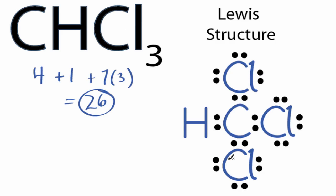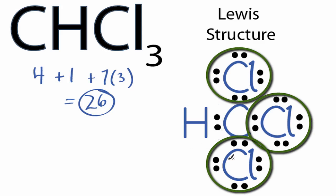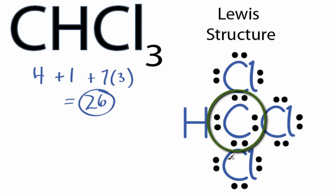So we've used all 26 valence electrons in the Lewis structure for CHCl3, and each of the atoms now has a full outer shell. Hydrogen only needs 2 valence electrons, so its outer shell is full. Each chlorine has 8 valence electrons, so its octet is satisfied. And then the carbon in the center also has 8 valence electrons. So that's the Lewis structure for CHCl3.